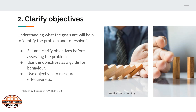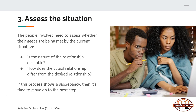Step two: clarify objectives. Understanding what the goals are will help to identify and solve the problem. Set and clarify the objectives before assessing the problem, and use those objectives as a guide for behavior and to measure the effectiveness of your solution. Once everyone is invested in the process and understands the goals and objectives of the resolution, you can assess the situation. Everybody involved needs to assess whether their needs are being met by the current situation — is the nature of the relationship desirable, and how does the actual relationship differ from the desired relationship? If this process shows a discrepancy, it's time to move on to the next step.